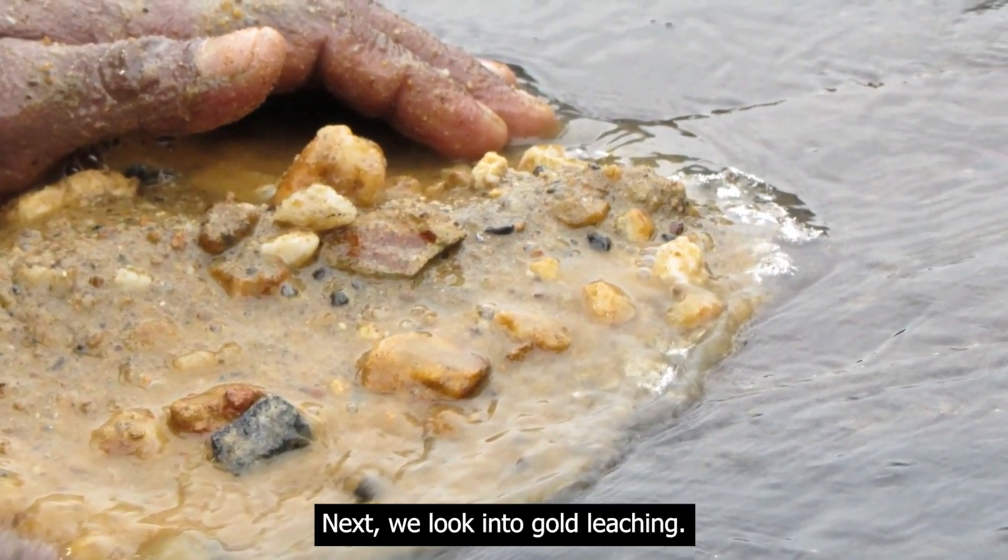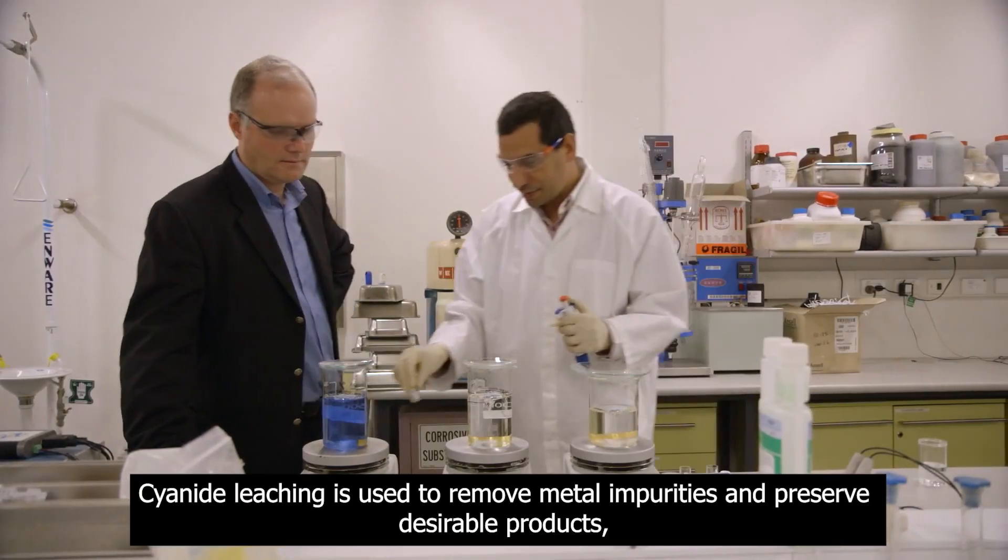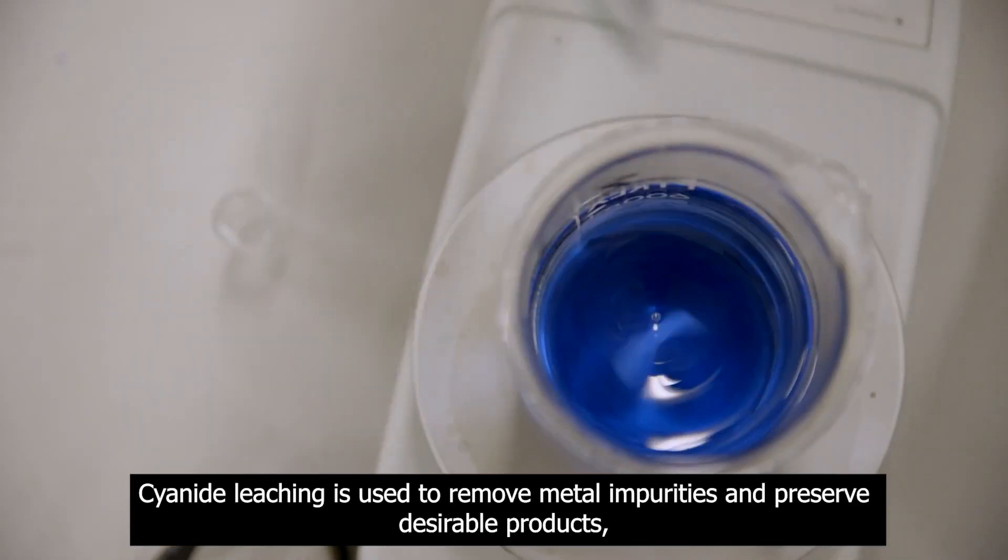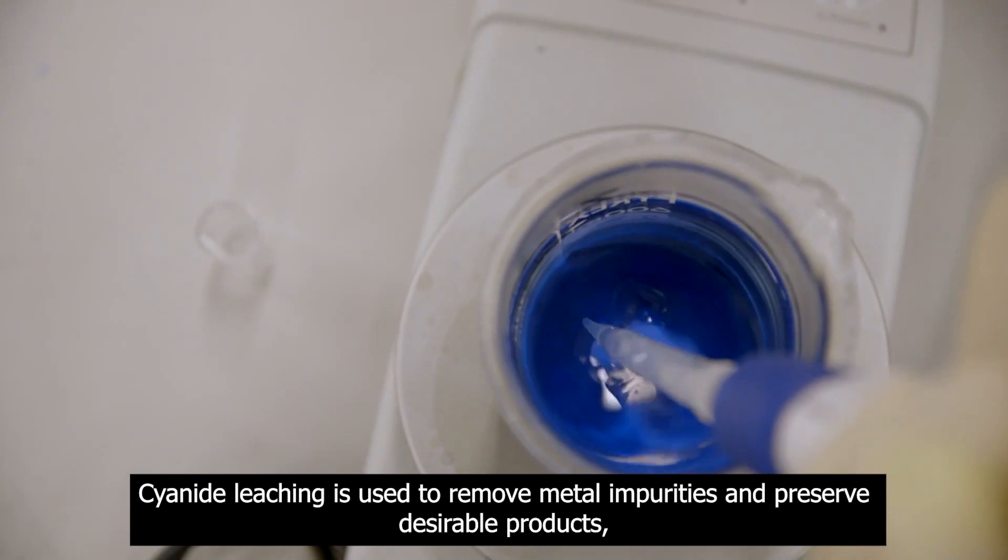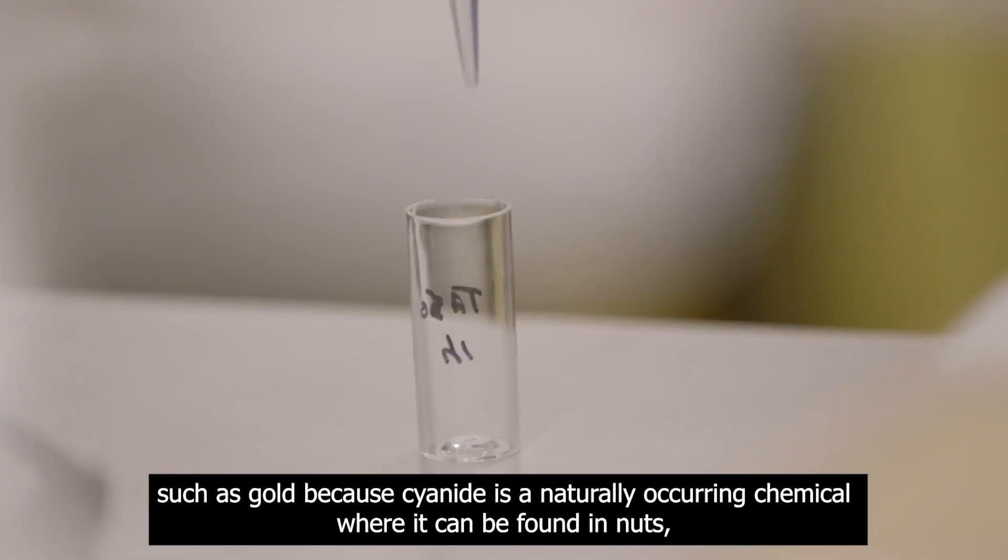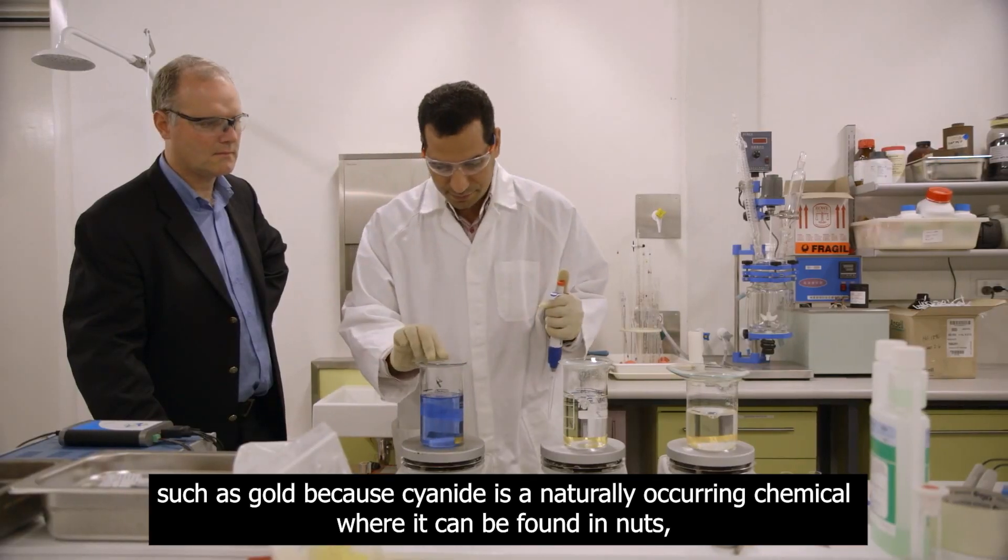Next, we look into gold leaching. Cyanide leaching is used to remove metal impurities and preserve desirable products, such as gold,